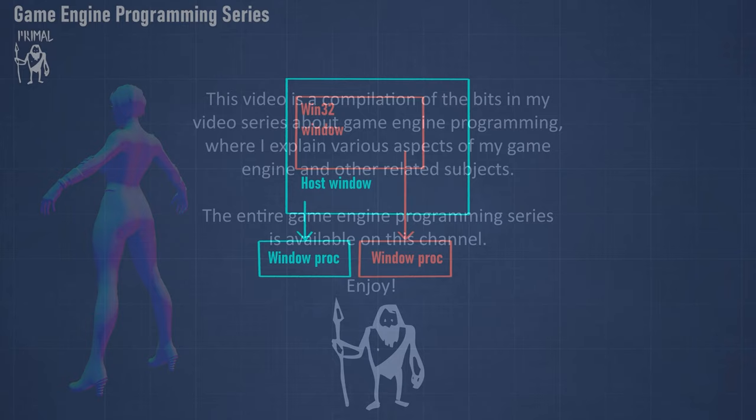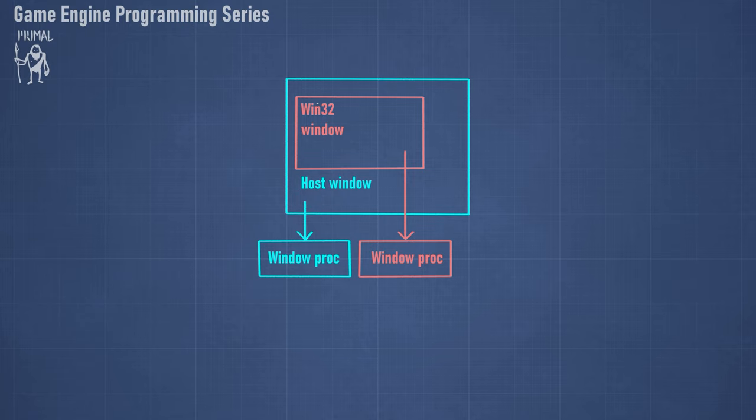Here you can see that we have this Win32 window hosted in our WPF application. Because we are on Windows operating system, even this WPF window has a message loop, and therefore we can use a window proc to receive messages from the message loop of whatever window this window is hosted in, and we can combine these two to handle resizing.